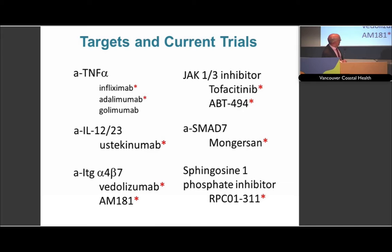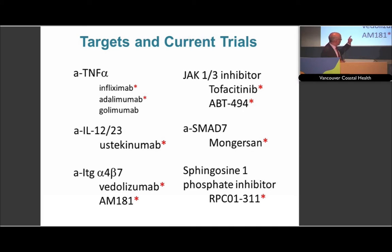SMAD7 I've talked about. There's also sphingosine-1-phosphate — instead of preventing lymphocytes migrating into the gut, this compound sequesters all the lymphocytes. Things like this have been used in MS favorably. The red asterisks demarcate the ones we've either been involved with or are currently involved in trials. We're looking at all these compounds. And with that, I thank you.